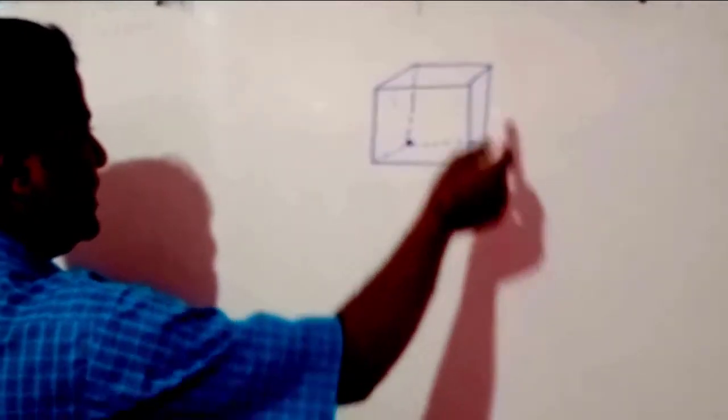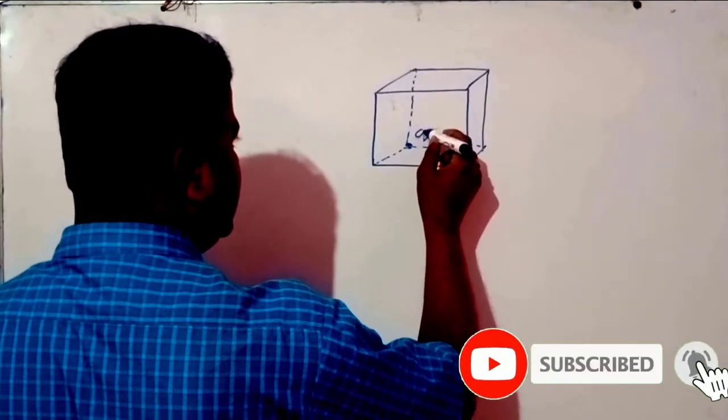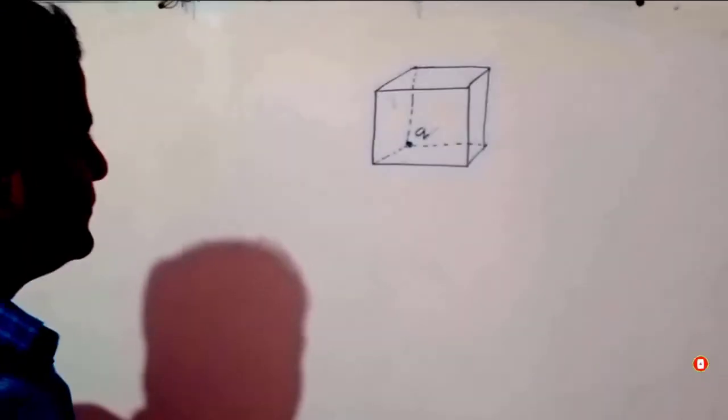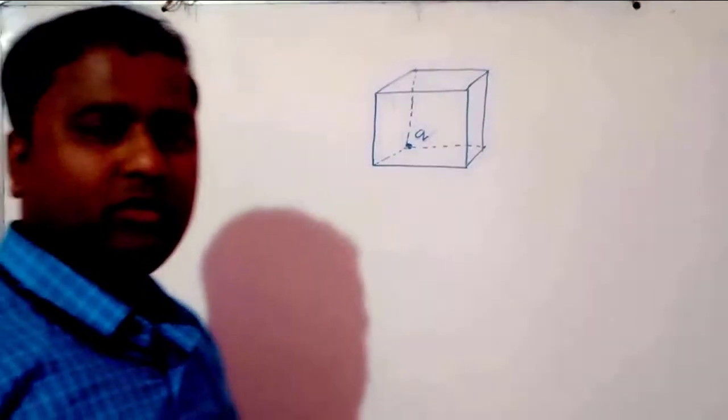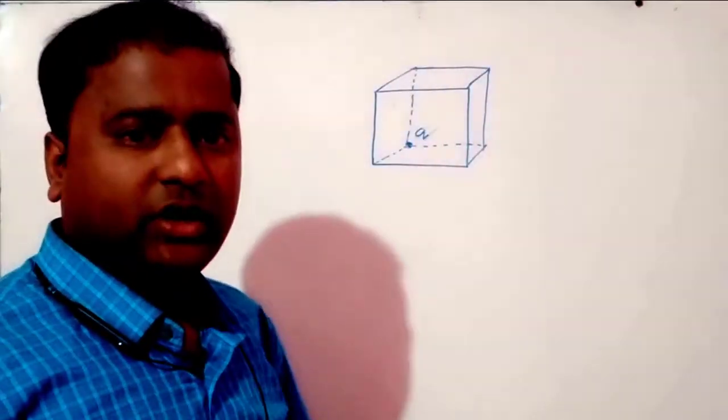Here is a cube and here is a charge q at a corner of the cube. Now, we have to find out what is the electric flux through this cube.